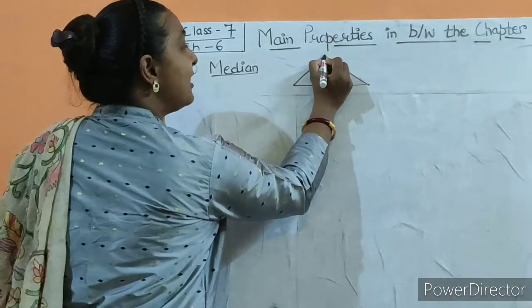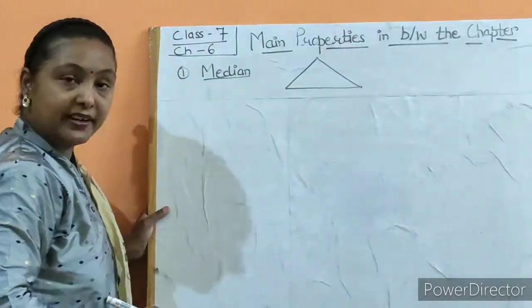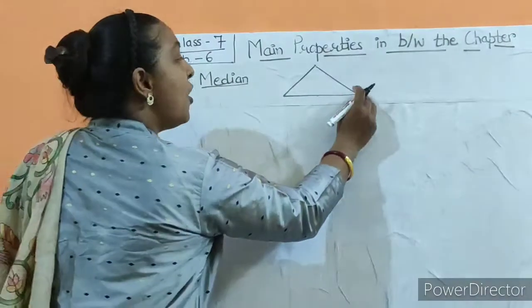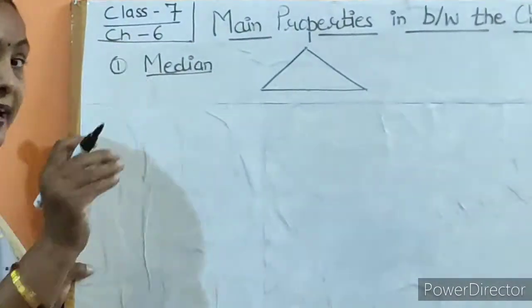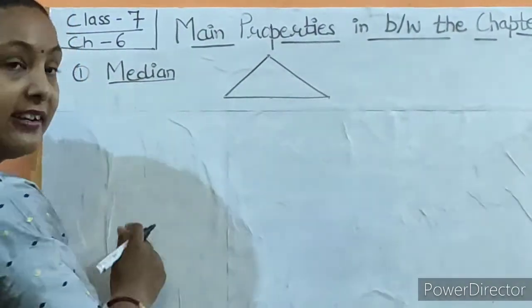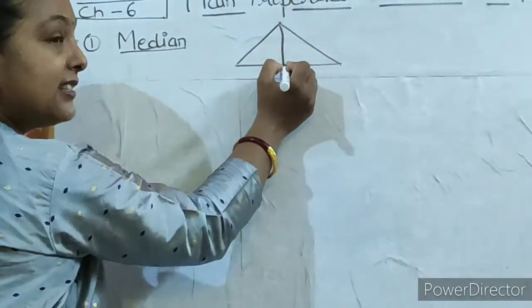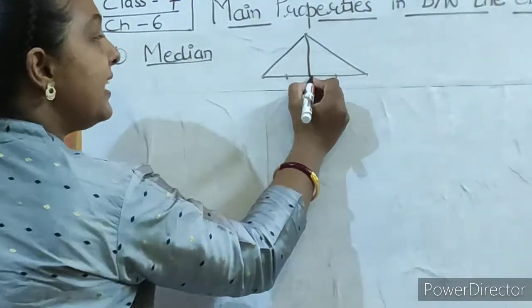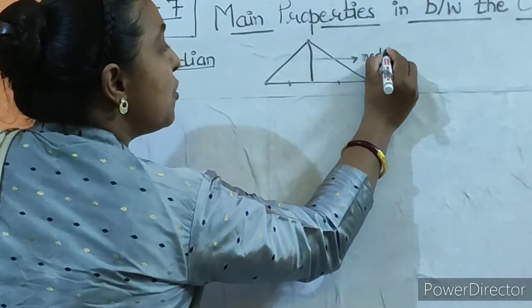What is the median? If you have a vertex of the triangle, the line drawn to the opposite side of the triangle divides that opposite side into two equal parts. This line is called the median. This is the first property.